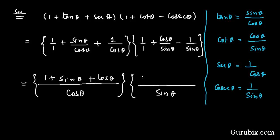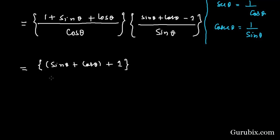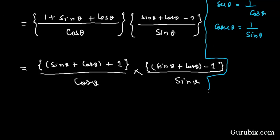The second bracket becomes (sin θ + cos θ - 1) / sin θ. So we can write the full expression as [(sin θ + cos θ) + 1] / cos θ times [(sin θ + cos θ) - 1] / sin θ.